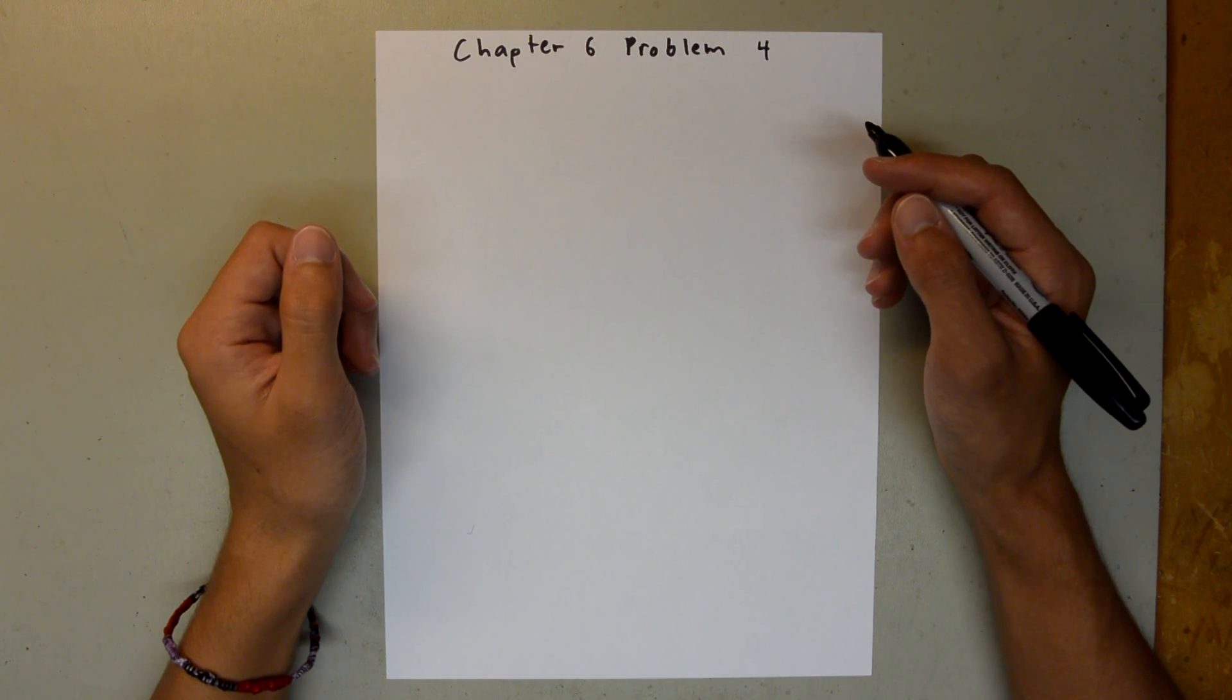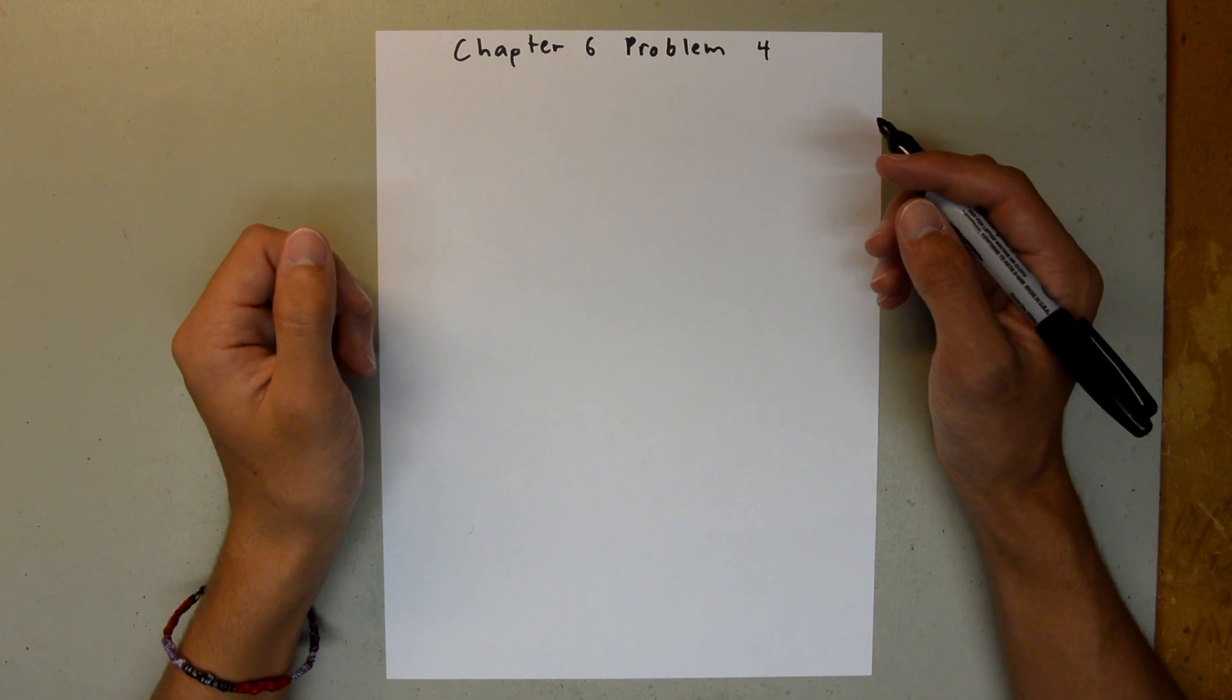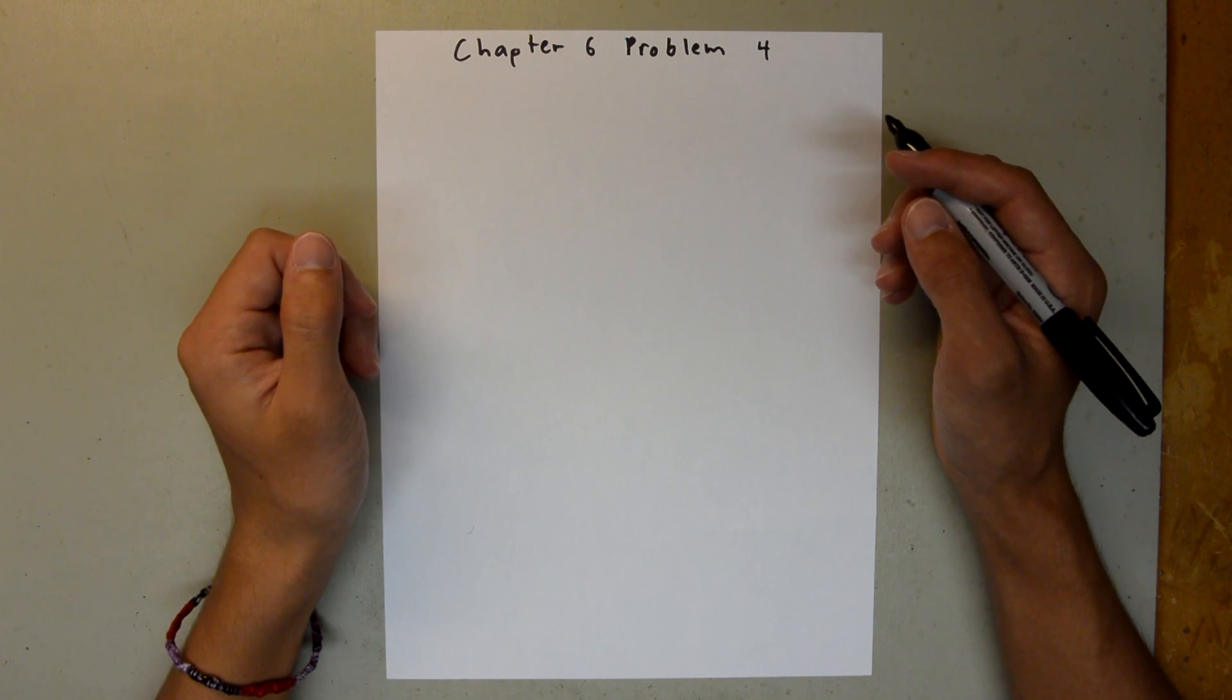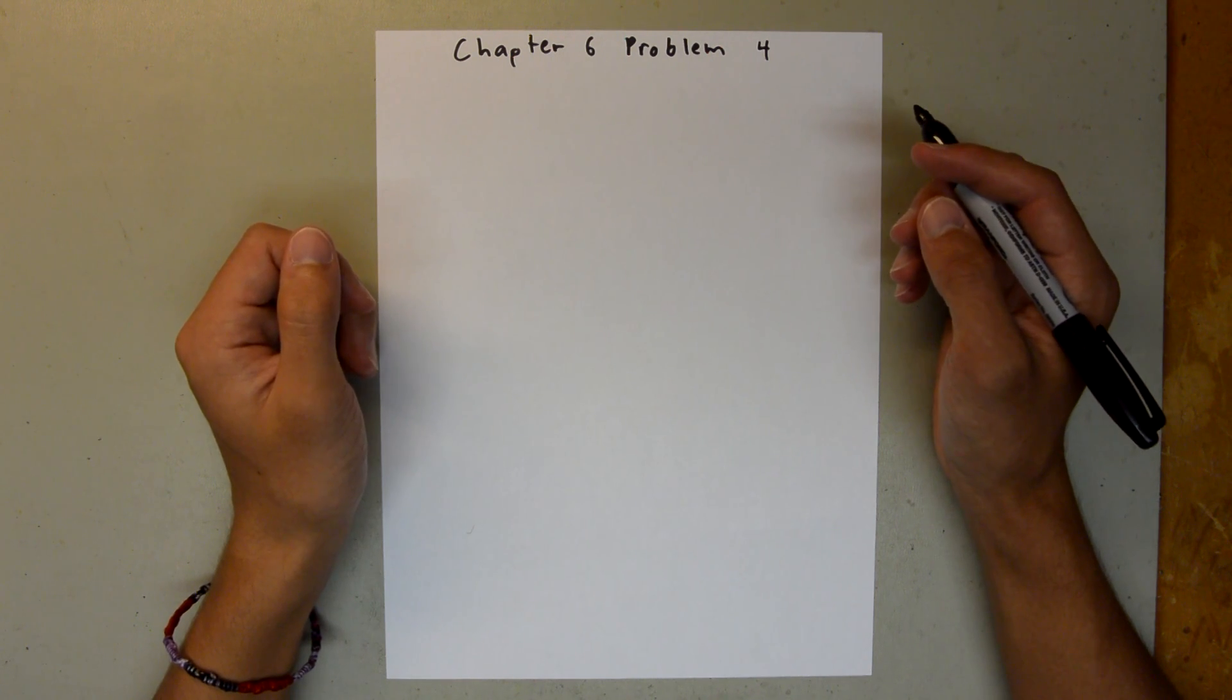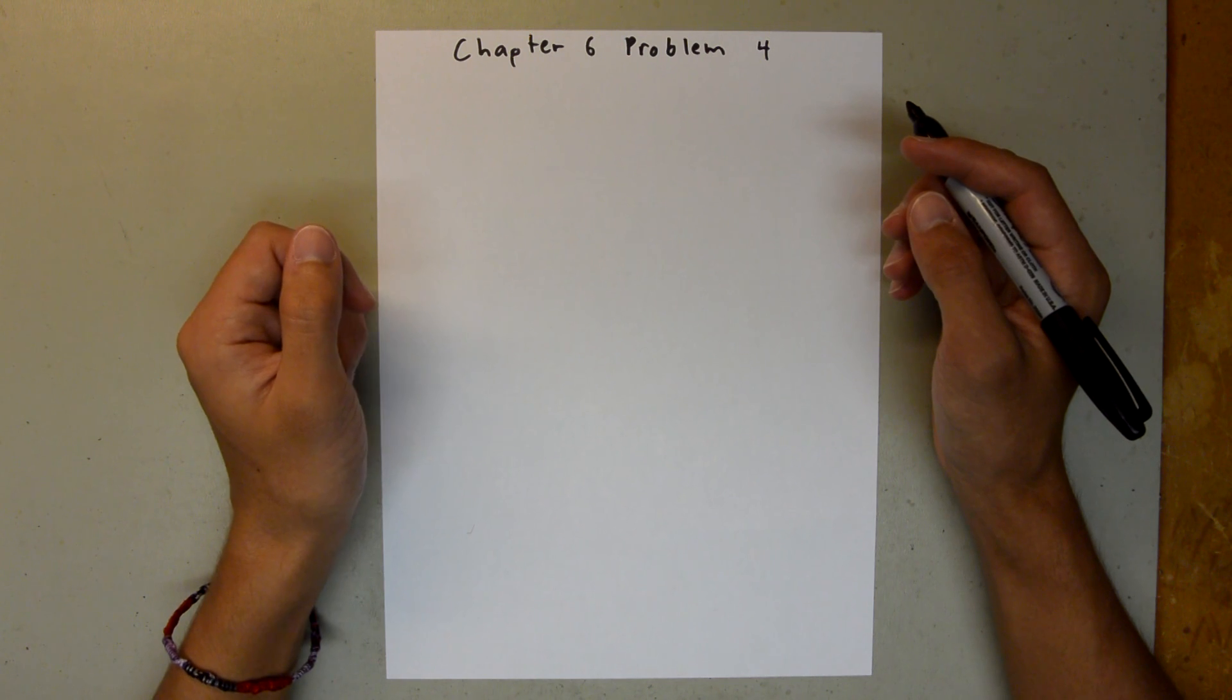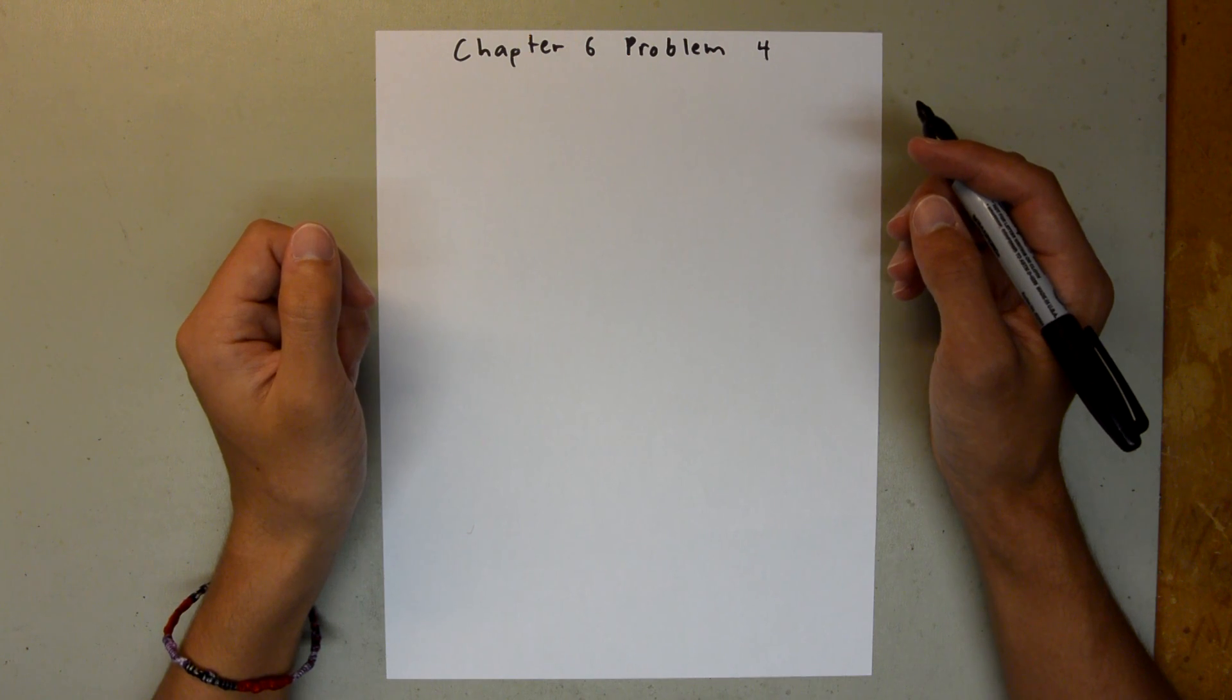Chapter 6 is all about force and motion, Part 2. And in particular, in Problem 4, we have a baseball player who's sliding into a base, and we are given the mass and the magnitude of the frictional force, and we are asked to find the coefficient of kinetic friction between the ground and the player.